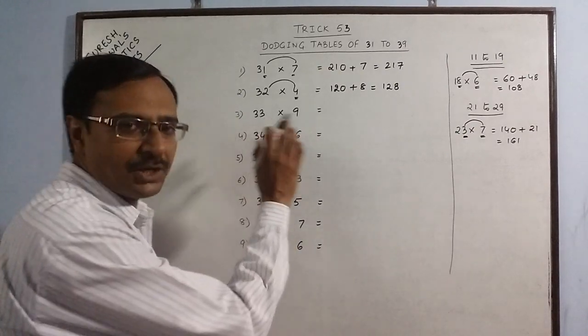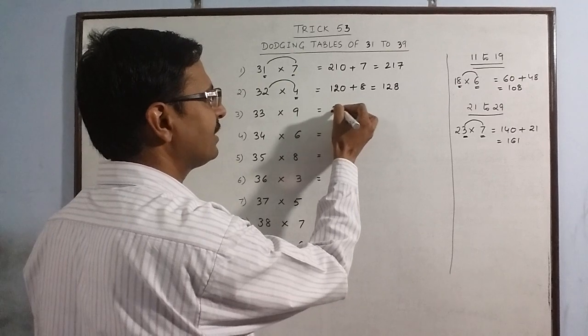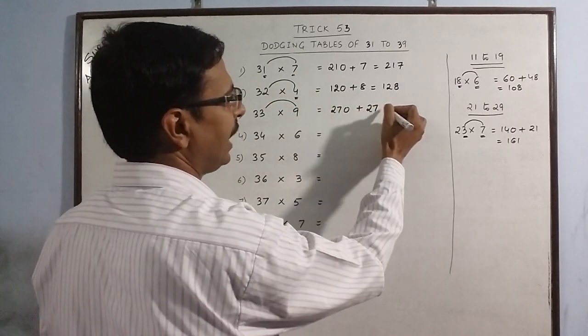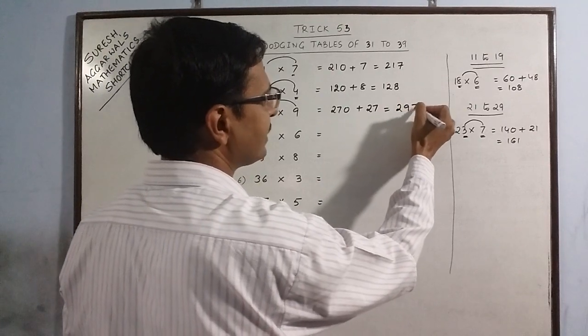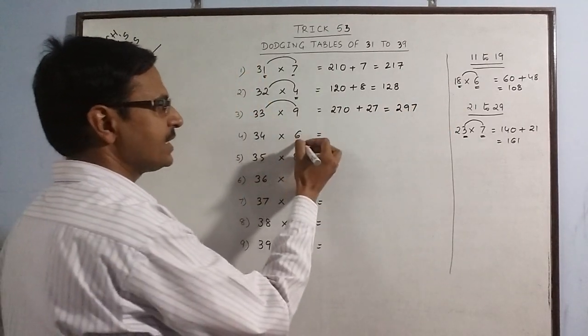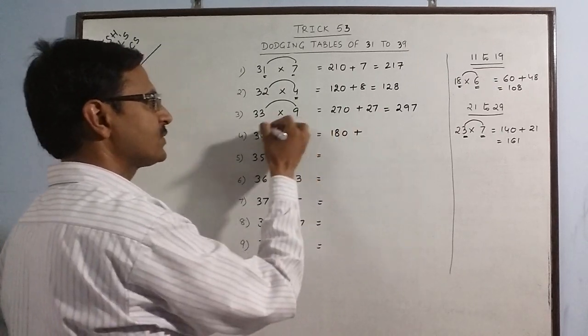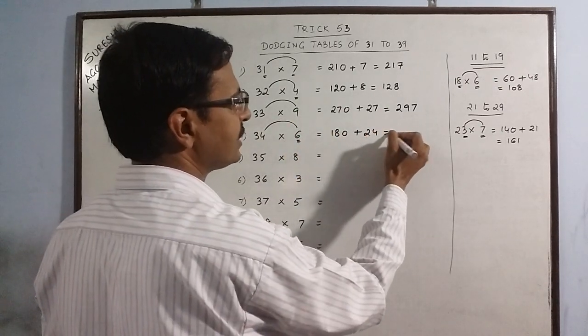33 into 9: 9 threes are 27, put a 0, and 9 threes are 27. Add the two results: 297 is the product. 34 into 6: triple of 6 is 18, put a 0, 6 fours are 24, add the two: 204.